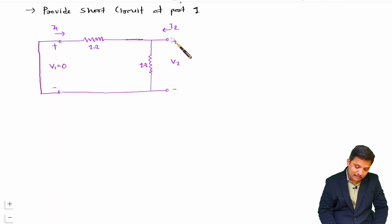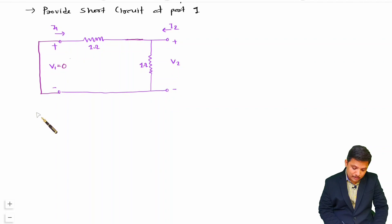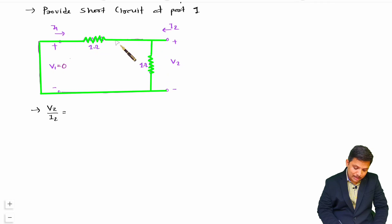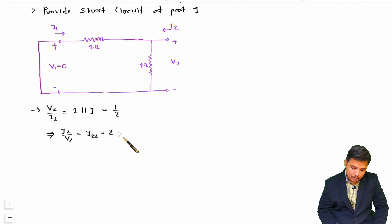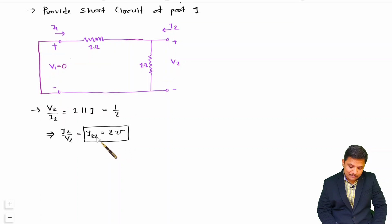Our agenda is now to find the relation of i2 and v2, and i1 and v2. For y22, we need v2/i2, which is just looking at the impedance from port 2: that is 1 ohm in parallel with 1 ohm = 0.5 ohm. So y22 = i2/v2 = 2 mho, which is the output admittance.